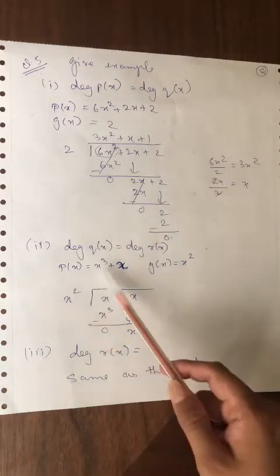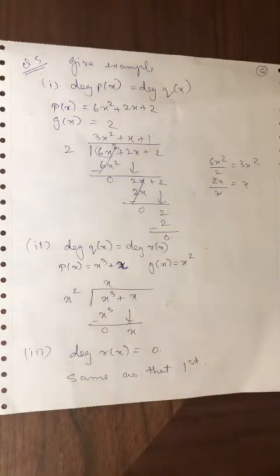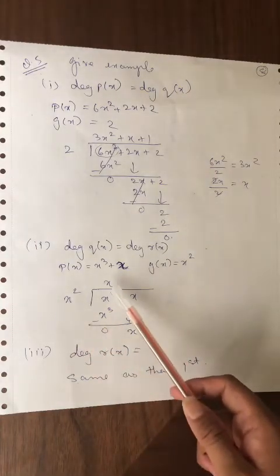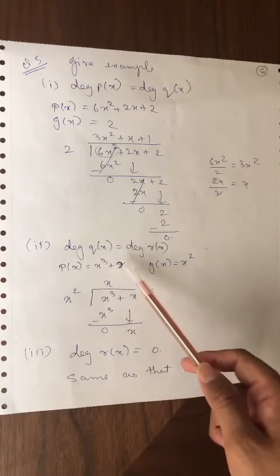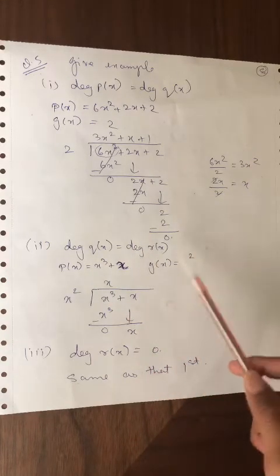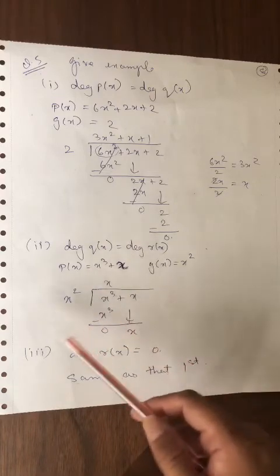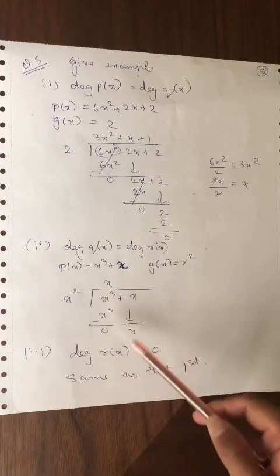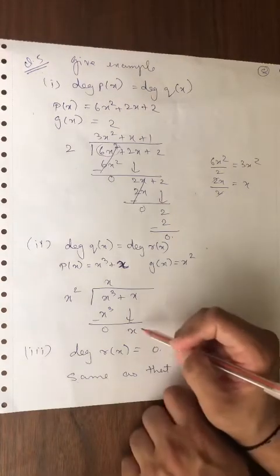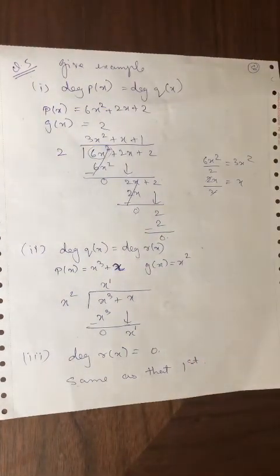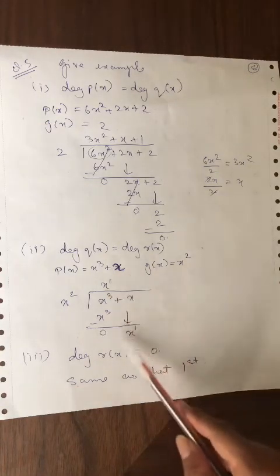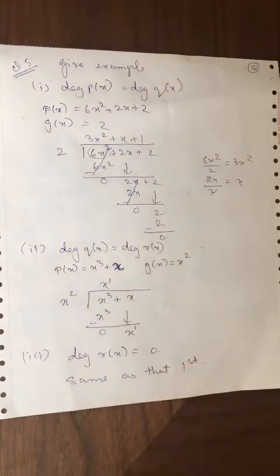The second example: degree of q(x) equals degree of r(x) — quotient and remainder have the same degree. Take p(x) = x³ + x and g(x) = x². Dividing x³ + x by x² gives quotient x (degree 1) and remainder x (degree 1). Both have power 1, so both degrees are the same.